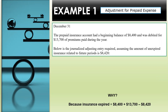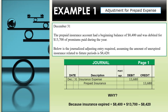Now that we have reviewed adjusting entries, let's jump in and practice journalizing more adjusting entries, keeping in mind every transaction impacts at least two different accounts. Example 1: This example pertains to an adjustment for a prepaid expense. On December 31, the prepaid insurance account had a beginning balance of $8,400 and was debited for $13,700 of premiums paid during the year. The adjusting entry requires a debit to insurance expense of $13,680 and a credit to prepaid insurance in the same amount of $13,680.